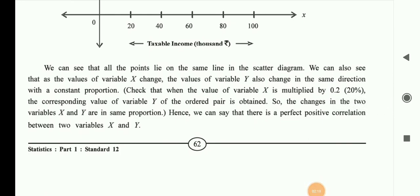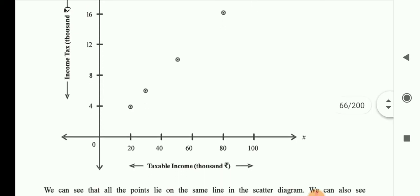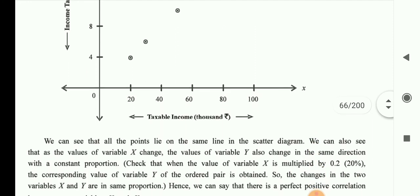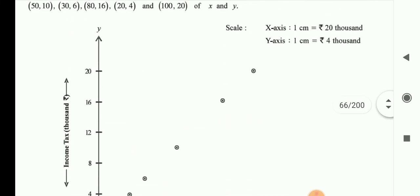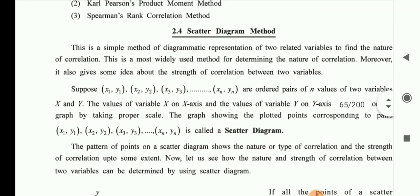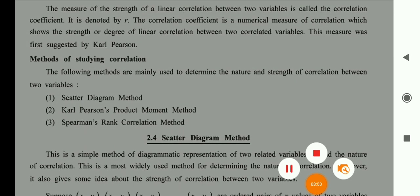In exercise 2.1, you only need to show positive and negative correlation by drawing this type of scatter diagram — it is not too difficult. In the next video, I will teach illustrations 2 and 3, and after that we will look at the second method, the Karl Pearson Method. Thank you for watching video one.